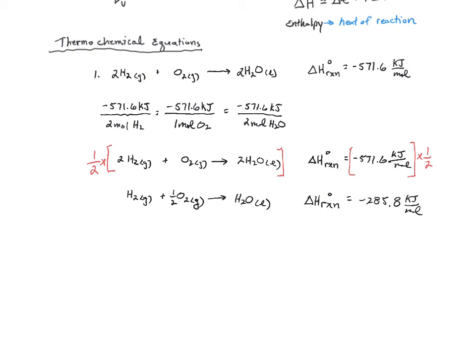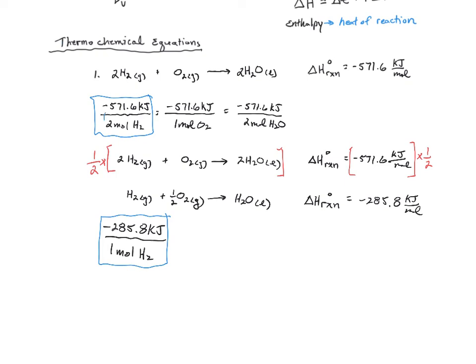With this enthalpy of reaction, what we're saying is that there are negative 285.8 kilojoules of energy being given off for the reaction of every one mole of H2. If you think about it, that's the same as dividing negative 571.6 by 2 from the original equation. We can multiply a thermochemical equation by literally any value, as long as we make sure that we multiply the enthalpy by the same value.